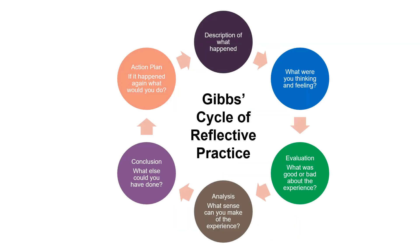We then looked at Gibbs' model of reflective practice. This is a continual process — you keep repeating the cycle and apply your increased level of awareness to improve your skills and provide a better service to the next client you interact with. The process involves describing what happened, then thinking about what you were thinking and feeling during the interaction, evaluating what was good or bad about the experience, making sense of what that experience was like, making conclusions about what else you could have done, and then putting in place an action plan so that if this type of interaction happened again, you would know what different things you would do.